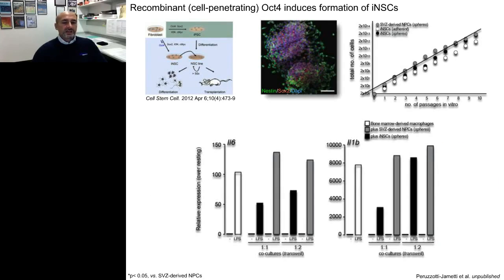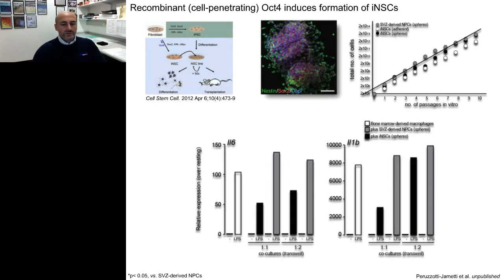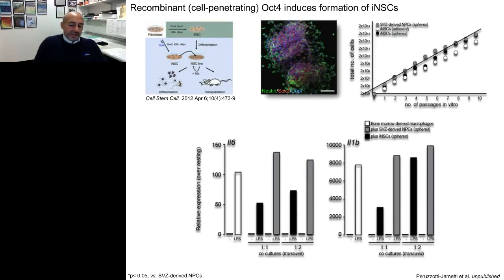With the idea of investigating some of their immunomodulatory actions, we established a very informative transwell co-culture system where INSCs or NPCs are co-cultured with bone marrow-derived macrophages. Interestingly, INSCs are very much capable of reducing in a dose-dependent way the upregulation of two pro-inflammatory genes, IL-6 and IL-1 beta, after activation of macrophages with the toll-like receptor 4 ligand LPS. This provides very nice preliminary evidence of immunomodulatory actions by INSCs.